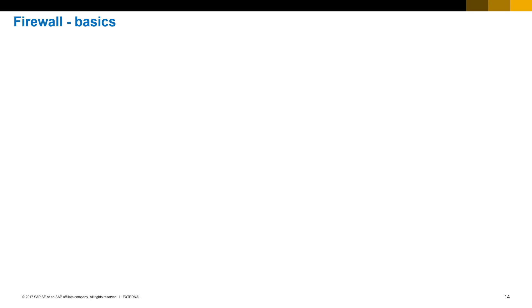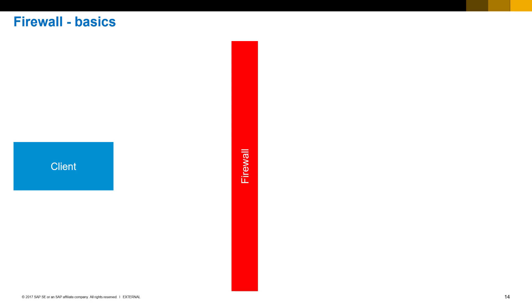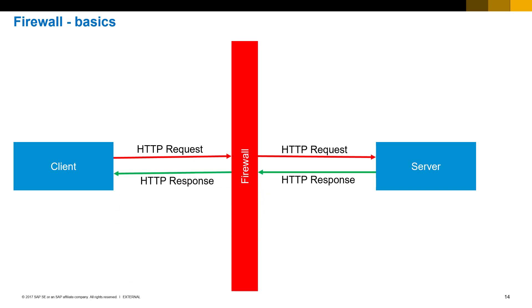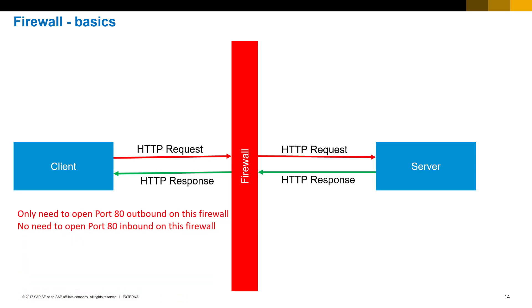Now let's talk about reverse invoke proxy. To understand it, let's cover some firewall basics first. We have a client, a firewall in the middle, and a server on the other side. The client makes an HTTP request on port 80, which goes through the firewall to the server, and the server responds back with an HTTP response. The answer is you only need to open port 80 outbound on this firewall.